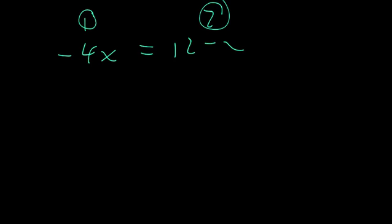So our second step is to find where these equations intersect each other. To do that, we can just set them equal to each other. So from equation 1, we have negative 4x.